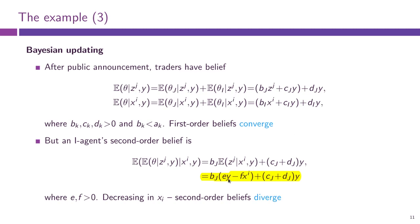Going back to this expression, one thing you get is that the second order expectation is decreasing in X_I. The higher your private signal, the more you think the expectation of theta_I is high, but the lower you think the other player will value the asset. This is a curious result — why does this happen?